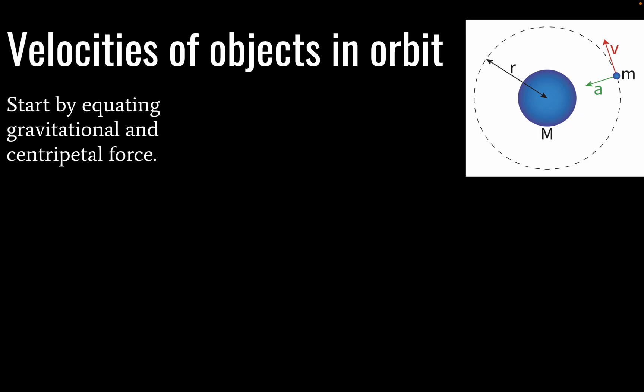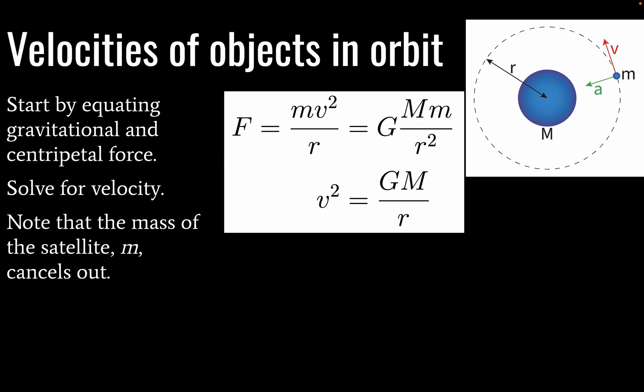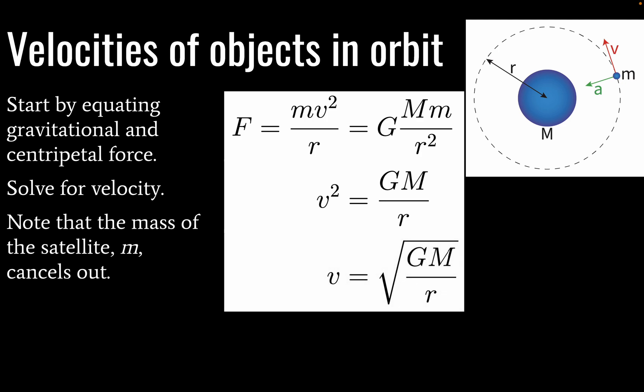Here it is. We need to start by equating gravitational and centripetal force. We should be kind of used to this in IB physics at this point. It's a common physics skill to equate forces. So we equate gravitational and centripetal force. Solve for velocity and we'll note that the mass of the satellite cancels out. Here's step one. Step two, we solve this equation for velocity squared. Take the square root of both sides. That gives us velocity equals the square root of the gravitational constant times the mass of the body about which we are orbiting, divided by the distance to that body.